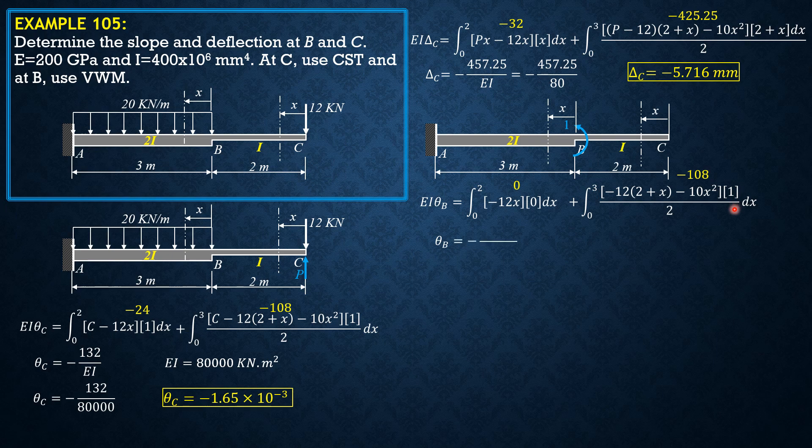So theta B is negative 108 over 80,000, convert it automatically to radians, so theta B is negative 1.35 times 10 to the negative 3 radians. So we remove the unit couple, replace it by upward force 1.